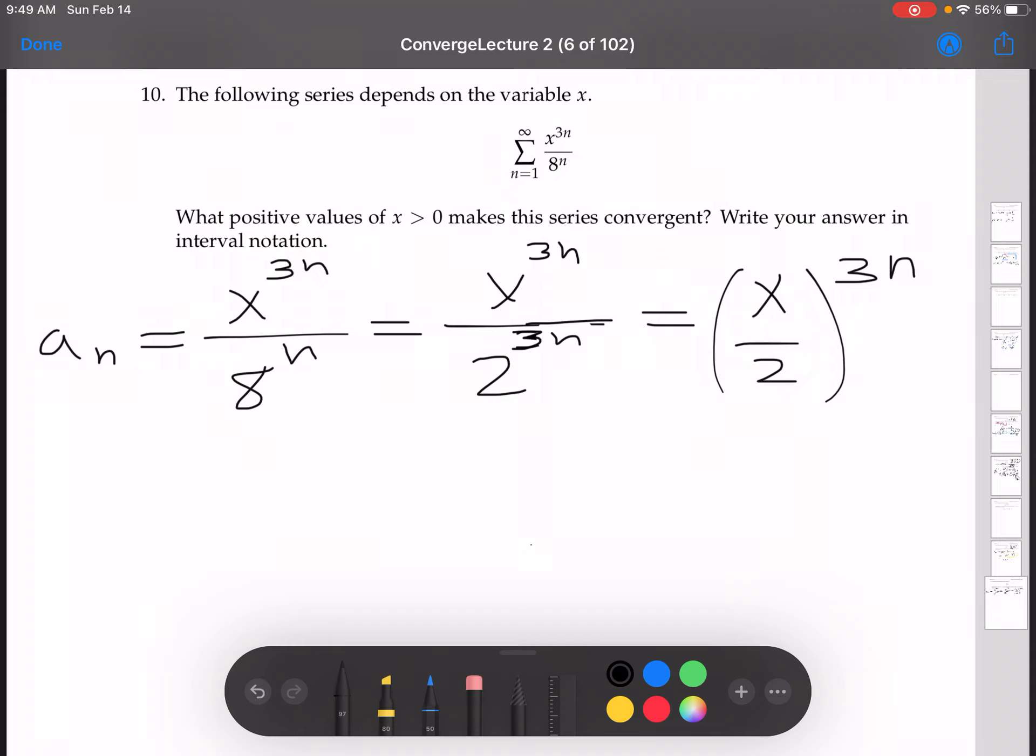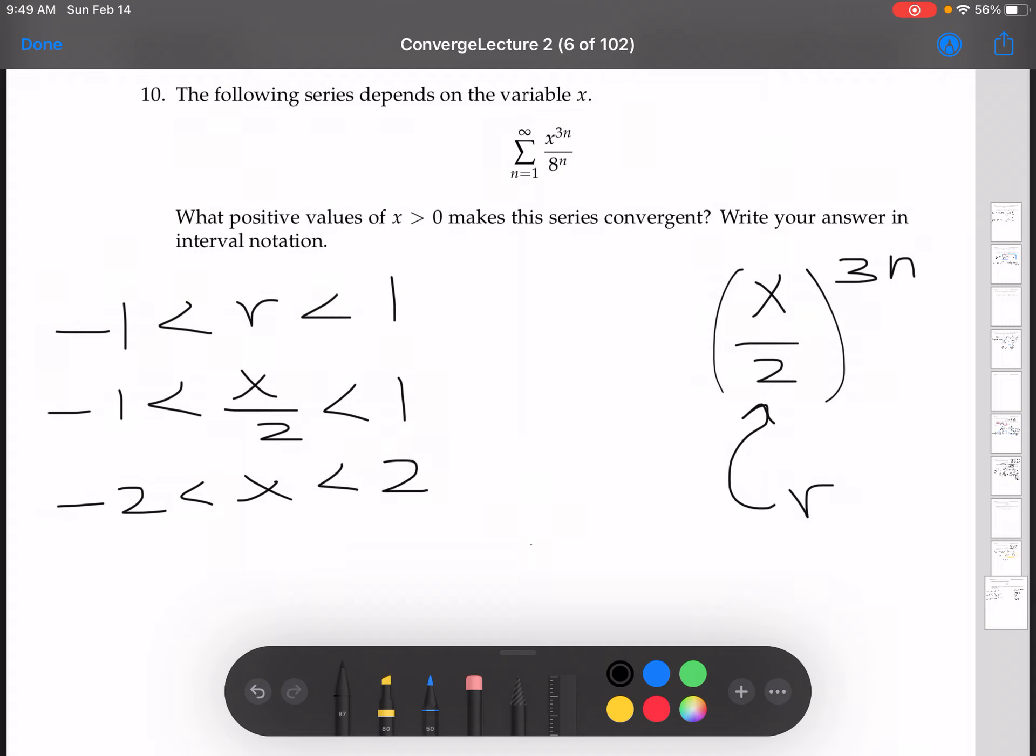All right, so now remember, this is r, right? That's our r. r is x over 2. So now remembering that a geometric series converges when r is between negative 1 and 1, we can say negative 1 < x/2 < 1, so negative 2 < x < 2. And our answer is going to be negative 2, 2. There it is.